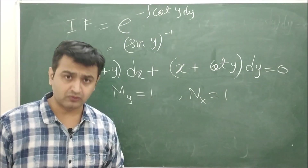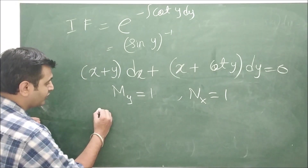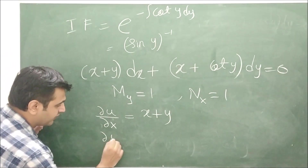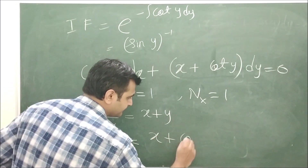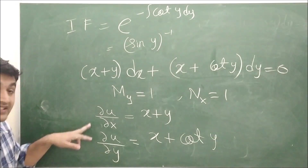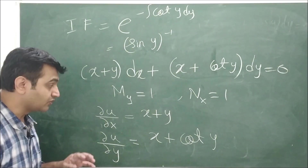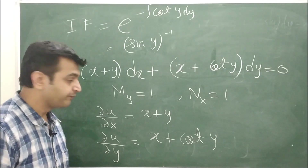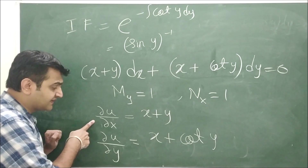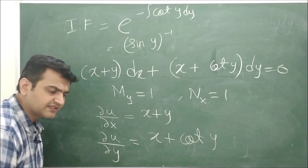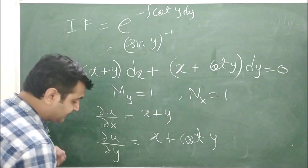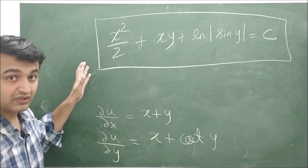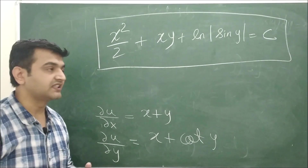Now that the equation is exact, apply the standard algorithm from the previous lecture: set ∂u/∂x = x + y and ∂u/∂y = x + cot y. Integrate the first equation with respect to x, differentiate with respect to y, compare with the second equation, and integrate again. The general solution works out as shown. Make sure to do the calculations yourself and comment if you get stuck.